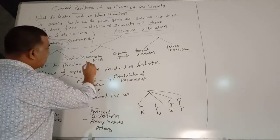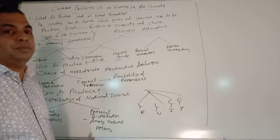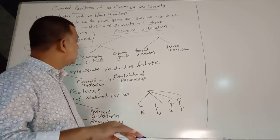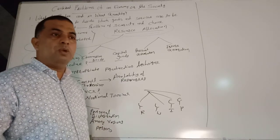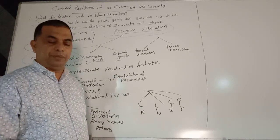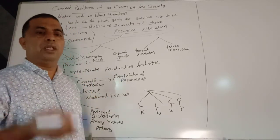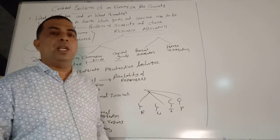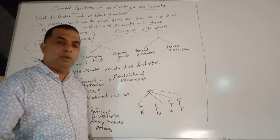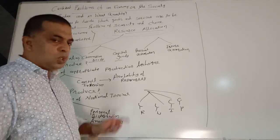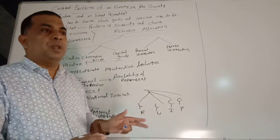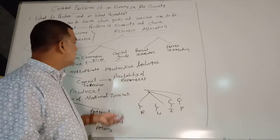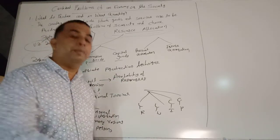The second choice under this problem is the choice between consumption goods and capital goods, which we have already discussed in the context of demand. Consumption goods are those which satisfy human wants directly — cold drinks, milk, chocolate, bikes, cars, TVs, etc. The country has to decide how much resources are to be used for the production of consumer goods and how much are to be used for capital goods.